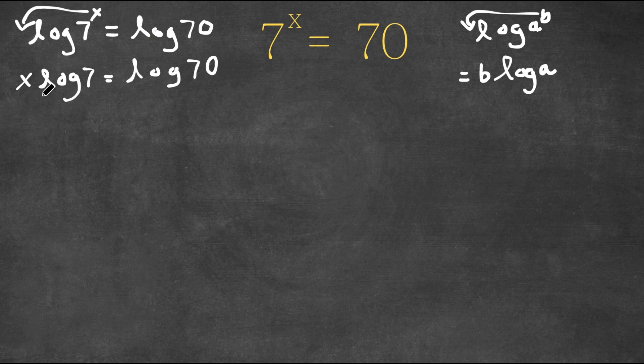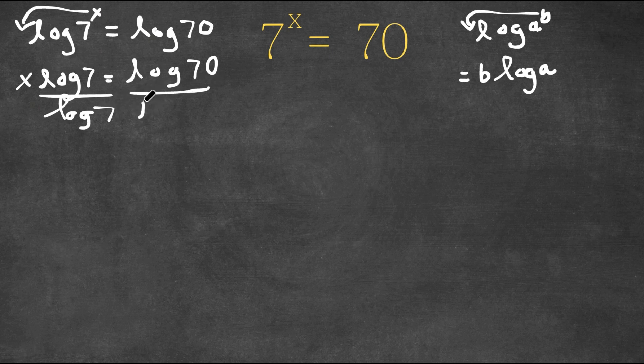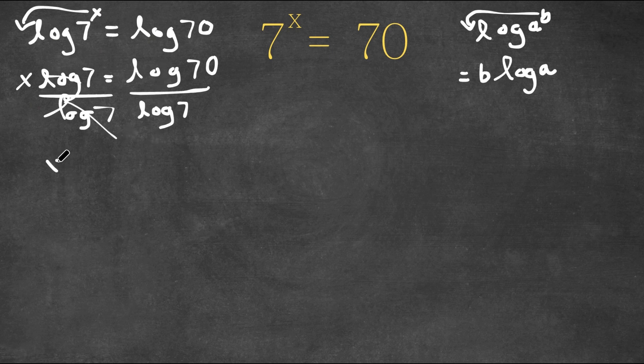And now, obviously, we want to find the value of x, so we need to isolate it. That's why I'm going to divide both sides by log 7. So now log 7 cancels out, and we have x is equal to log 70 divided by log 7.